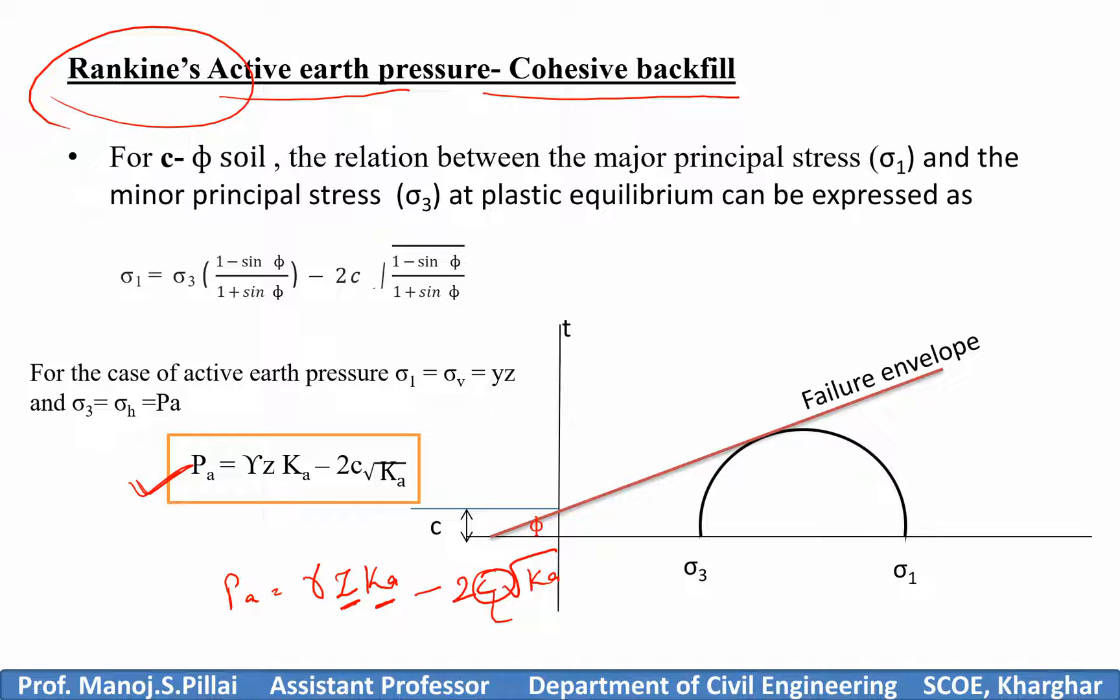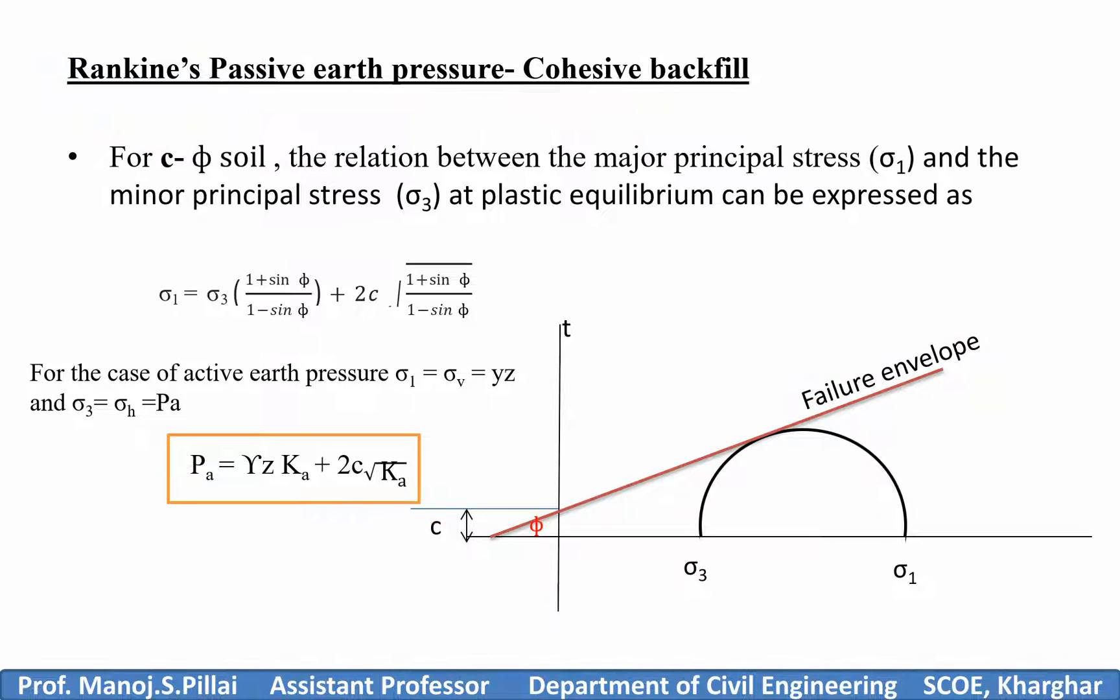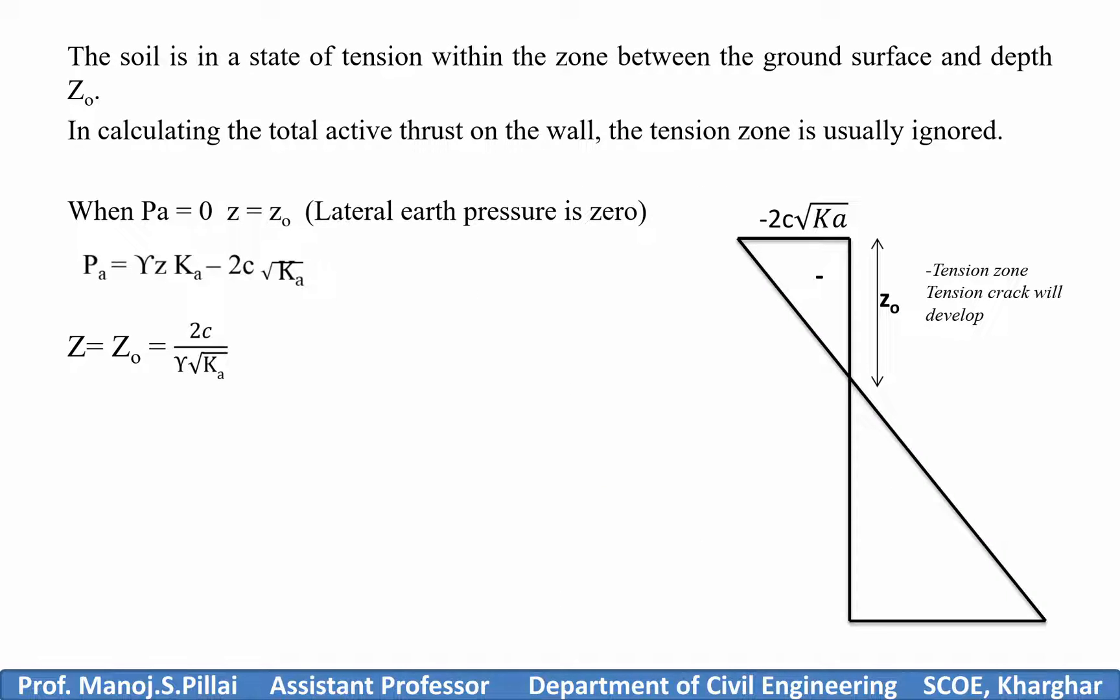You have C here and phi, which is your angle of shearing resistance. Now, what's the difference between active and passive? In active you have a minus sign, in passive you have plus. That's all about your active and passive.